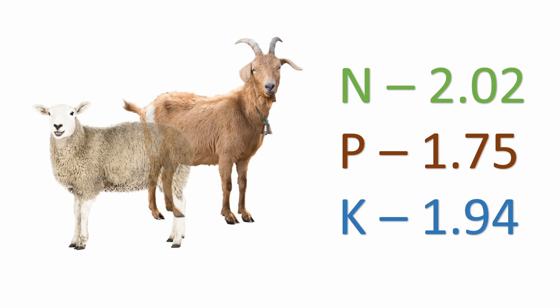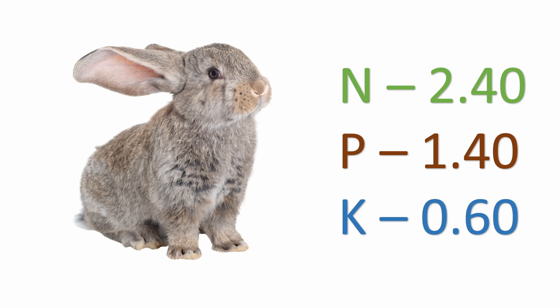For pigs, you have here a high source of nitrogen and a well balance between phosphorus and potassium. For rabbits, it is a good source of nitrogen as well and for phosphorus and just a little potassium.